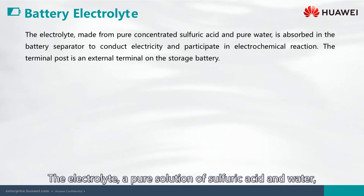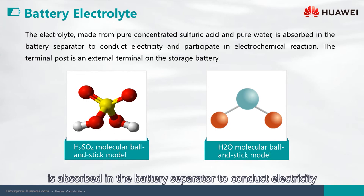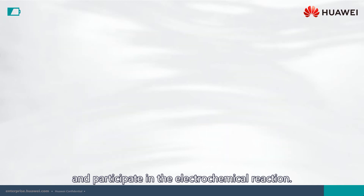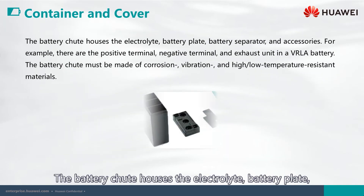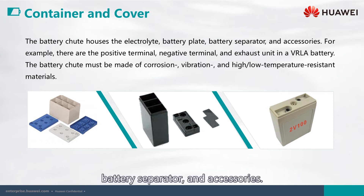The electrolyte, a pure solution of sulfuric acid and water, is absorbed in the battery separator to conduct electricity and participate in the electrochemical reaction. The battery chute houses the electrolyte, battery plate, battery separator, and accessories.